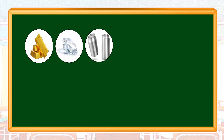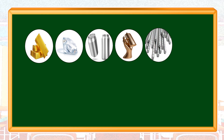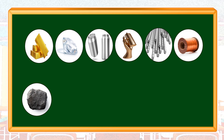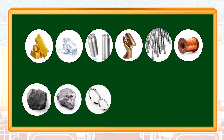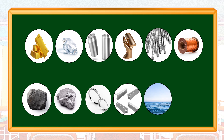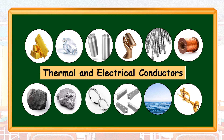Gold, diamond, aluminum, bronze, steel, copper, graphite, nickel, platinum, iron bars, seawater, and brass are examples of thermal and electrical conductors. What are the common characteristics of this set of materials?